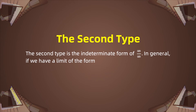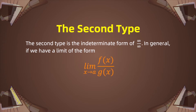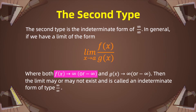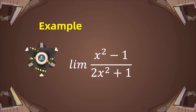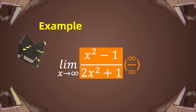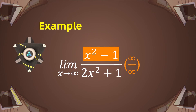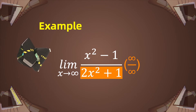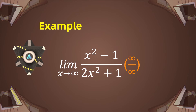The second type is the indeterminate form of infinity over infinity. In general, if we have a limit of f(x) over g(x) as x approaches a, where both f(x) and g(x) approach infinity or negative infinity, then the limit may or may not exist, and it is called the indeterminate form of infinity over infinity. For instance, the limit of (x² - 1) over (2x² + 1) as x approaches infinity: as x goes to infinity, x² - 1 goes to infinity and 2x² + 1 also goes to infinity, making it the form of infinity over infinity.